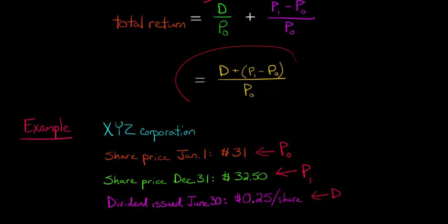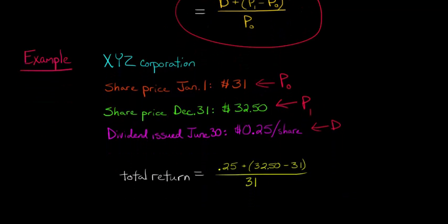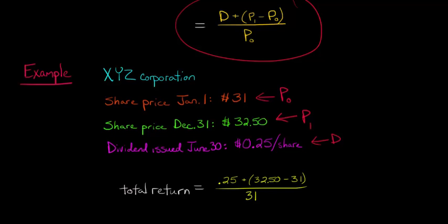So now we can just plug numbers into our formula, because we have the P-naught, we have the P-sub-1, and we have the D, the dividend. And we can just plug and chug and find out what the total return for our stock is. So the total return is going to be equal to $0.25, that's the dividend per share—you don't take the whole dividend for all the firm, everything that was issued, it's just dividend per share. And then you have here our capital gain, the $32.50 minus the $31. That's just the P-sub-1 minus P-naught.